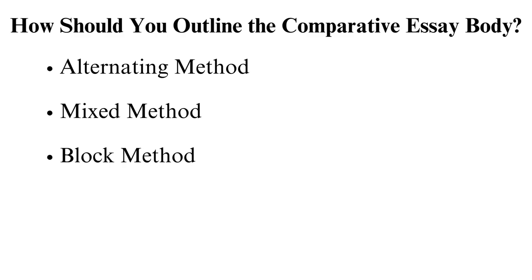How should you outline the comparative essay body? The following are the main ways of structuring your compare and contrast essay. Alternating method: in this method, you handle all the comparison ideas in one paragraph. This formula means you should explain all the details of a comparison for one subject. Then the following paragraph should elaborate on the same aspect but on the other subject. In short, the first and second paragraphs handle comparison in one aspect, and the third and fourth paragraphs will address the second aspect. Therefore, the alternating idea revolves around the two subjects.